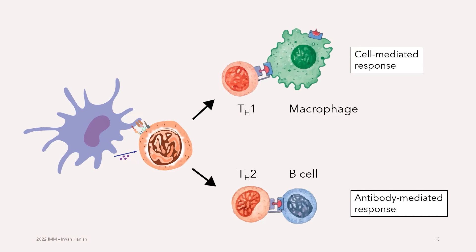TH1 cells are crucial in cell-mediated responses. When the TH1 pathway is activated, the TH cell releases cytokines like interleukin-2 and gamma-interferon and binds to cells like macrophages or cytotoxic T cells. If the antigen presentation triggers the TH2 pathway instead, TH2 cells release different interleukins and bind to different cells such as B cells, leading to antibody-mediated responses.